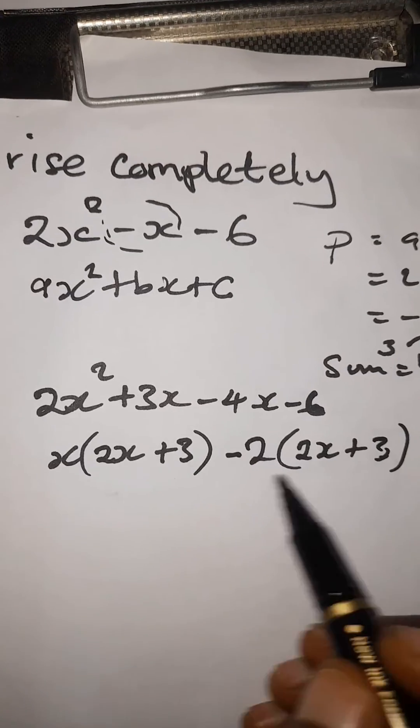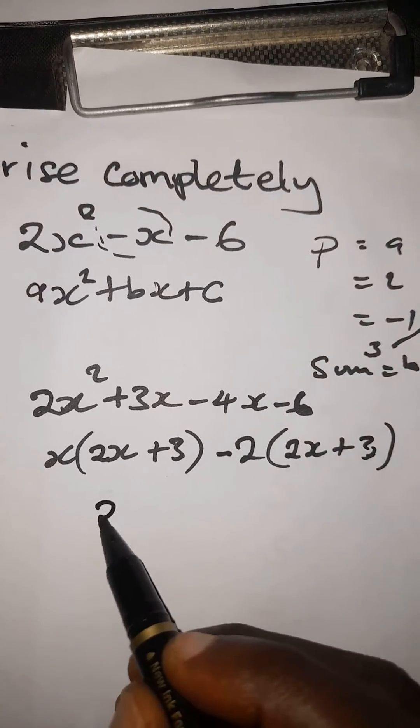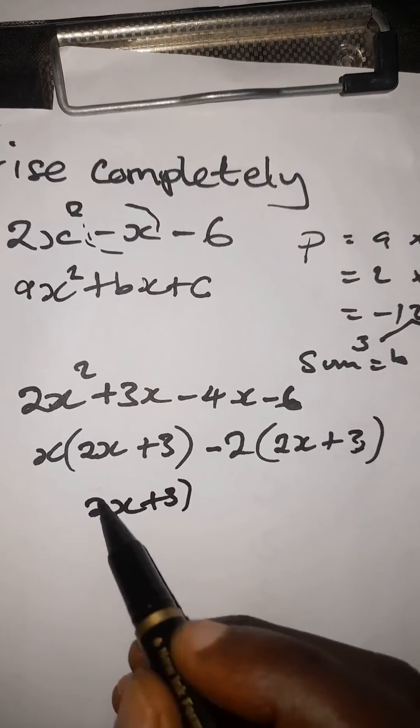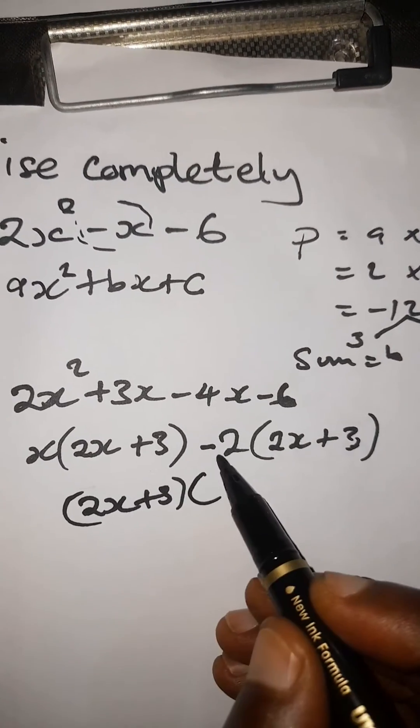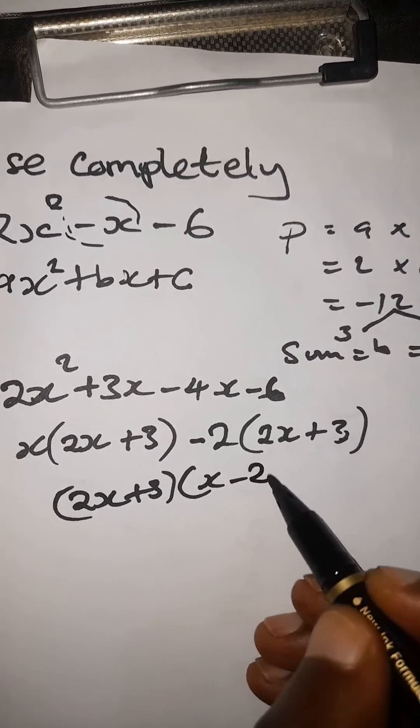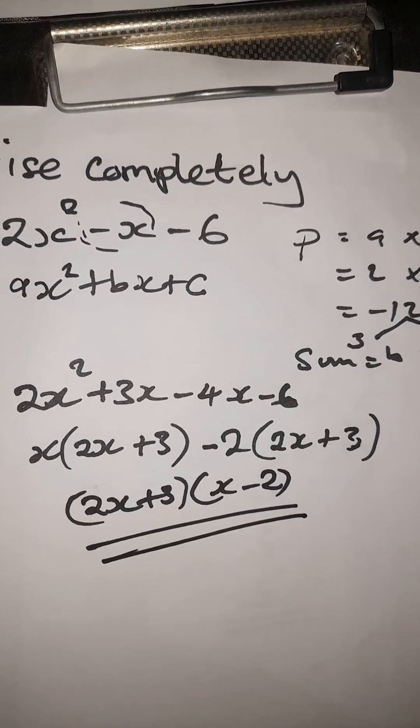You can just factorize because you have two terms. Write 2x plus 3 in brackets, then combine it with this one, which is x minus 2. This is the answer.